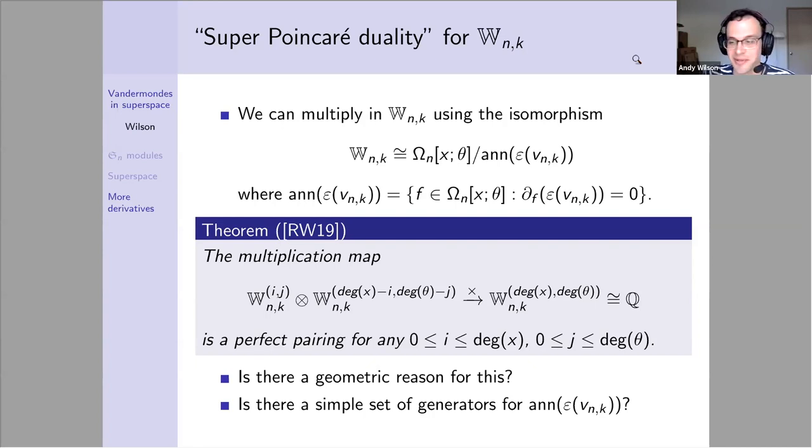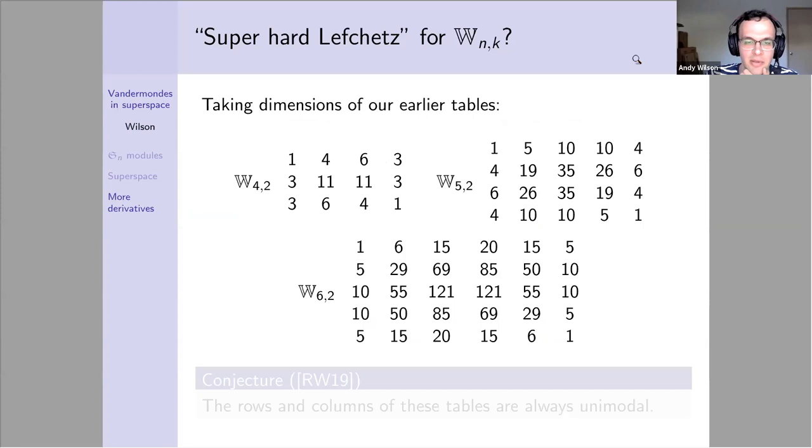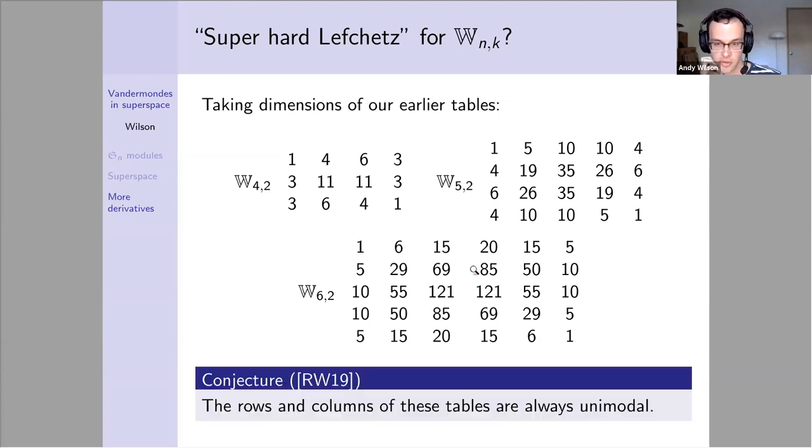I'm almost done, so there'll be more time for questions soon. If we take dimensions of this bigraded table I showed earlier, we get these pictures here. These are the largest I felt I could comfortably fit on the slide. We've computed up to n equals seven, I think, all these tables. Our conjecture is that the rows and columns of these tables are always unimodal. Again, this is something we could maybe prove using direct algebraic means, but we'd like it to be the result of some kind of hard Lefschetz theorem applied to some geometric object.